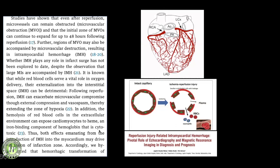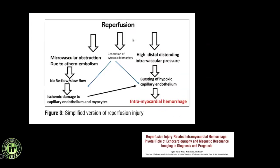All these effects of MVO and intramyocardial hemorrhage are really deteriorating for the patient. Once you perform reperfusion, whether pharmacologic or by stenting, cytotoxic biomarkers are already released, and there is high intravascular pressure in distal vessels. This leads to bursting of hypoxic capillary endothelium, further causing intramyocardial hemorrhage.